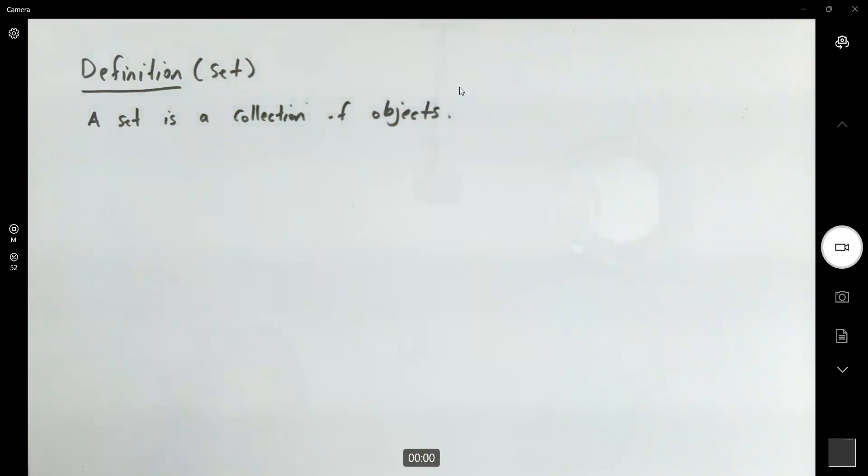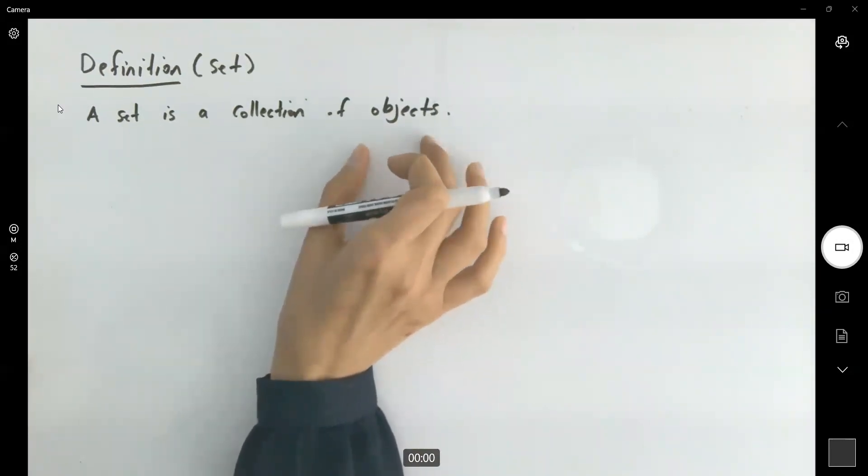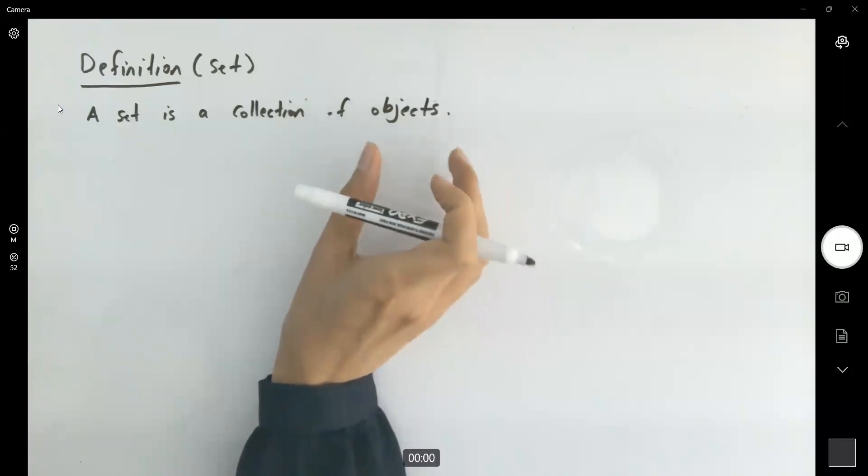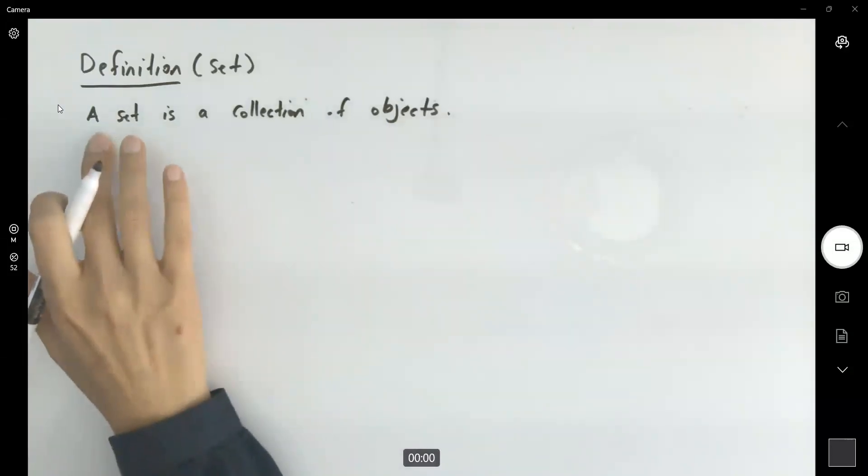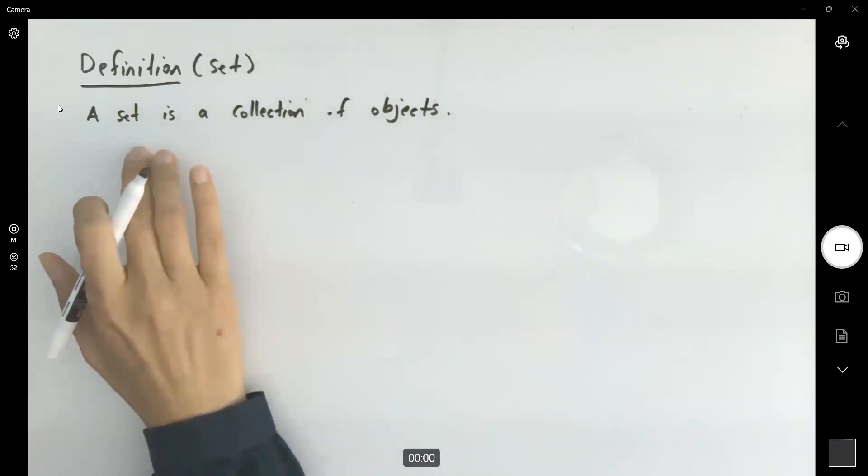When we're talking about objects, what objects are we talking about? Basically, you can talk about any set of objects. It can be a set of numbers, it can be a set of functions, it can be a set of anything that you like. As long as you have a collection of objects, you are forming a set.